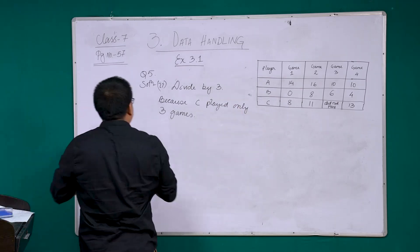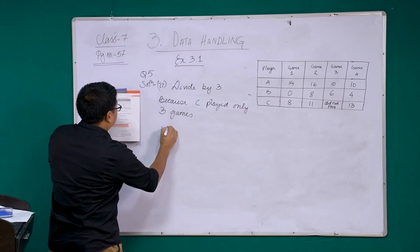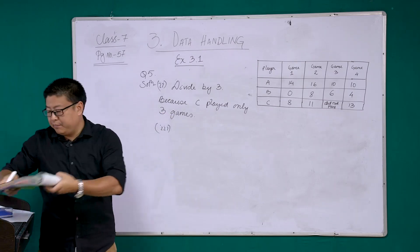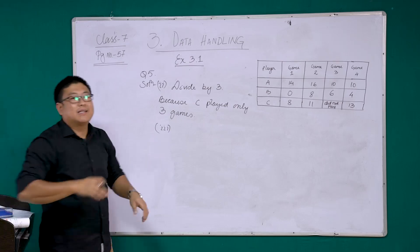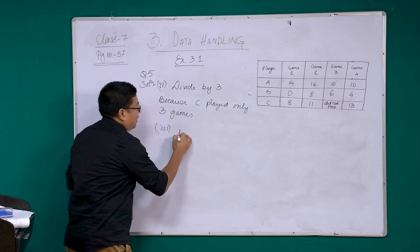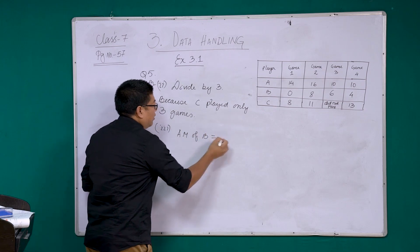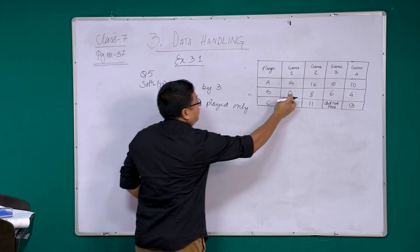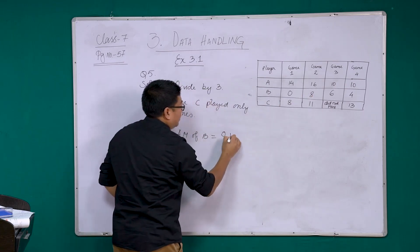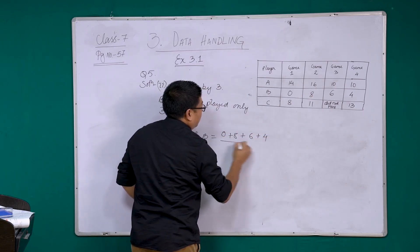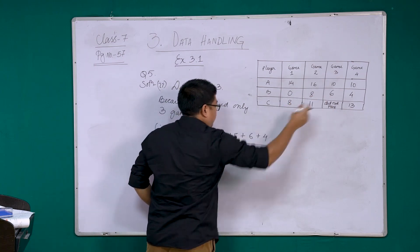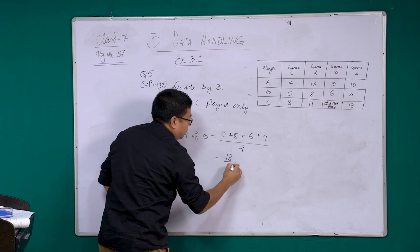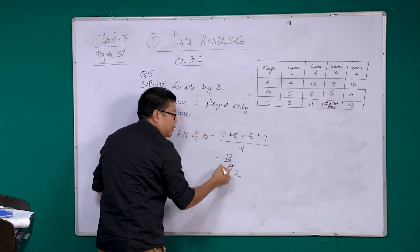Question 3. B played in all the 4 games. How would you find the mean? So this is the same as A. Now, arithmetic mean of B, or average of B, or mean of B. We can write it as, B, we have 0 plus 8, plus 6, plus 4, by 4. There are 4 observations, so we will divide by 4.